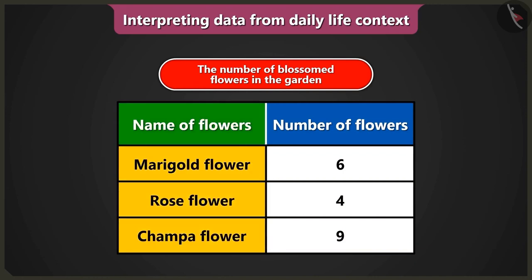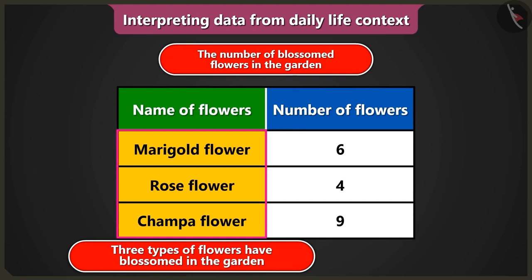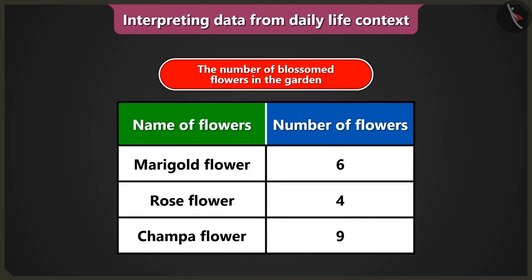There are two columns in the table. In the first column, the blossomed flowers in the garden are written. The names of the flowers are marigold flower, rose flower, and chumpa flower. From this data, we can know that three types of flowers have blossomed in the garden — first is marigold flower, second rose flower, and third is chumpa flower.